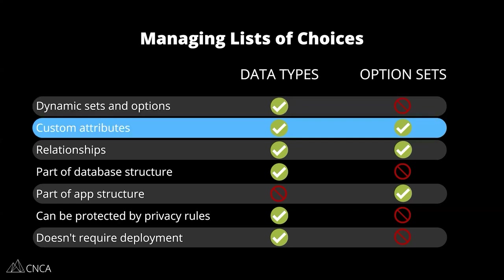The next difference is custom attributes. Both of them allow you to do that. With data types, you simply create more fields within the data type structure to record more property information for that individual entry. And then option sets have custom attributes that you can add as well, and they can accept a variety of different format types.